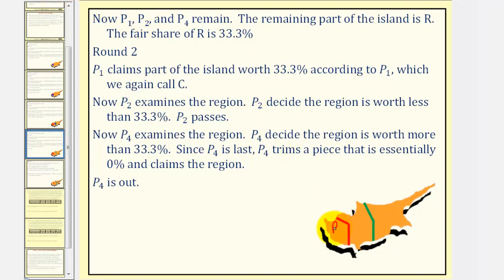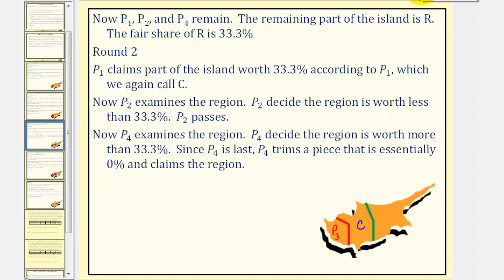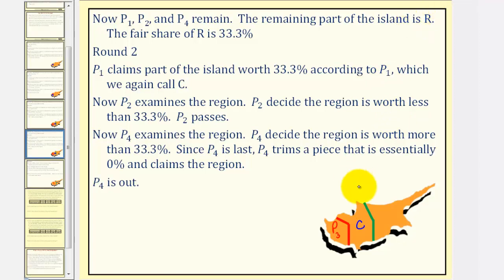Player three has their piece already. This is the new C. Going back to the previous example, player four is last and notice how player four just slightly trims it and now claims this piece, which they do value as more than thirty-three point three percent. So player four claims this piece and is out.